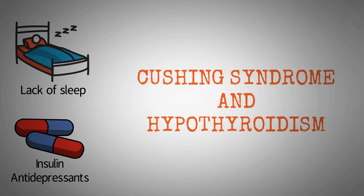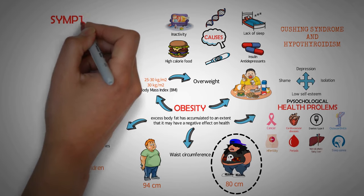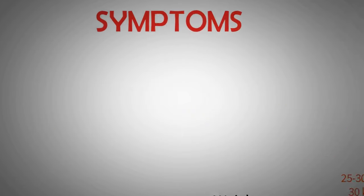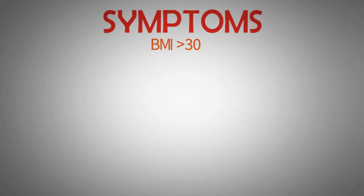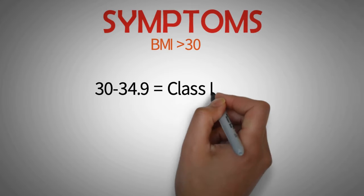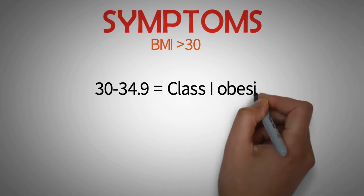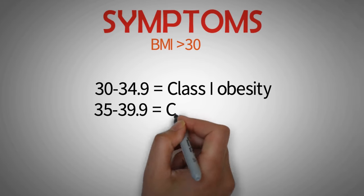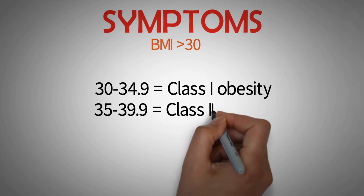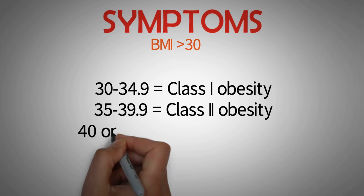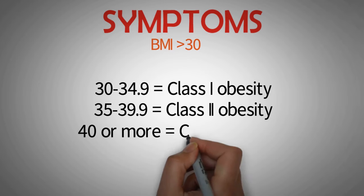A primary symptom of obesity is having a BMI of 30 or more. It can be categorized as: BMI of 30 to 34.9 is obese class 1, BMI of 35 to 39.9 is class 2, and BMI of 40 and higher is class 3.